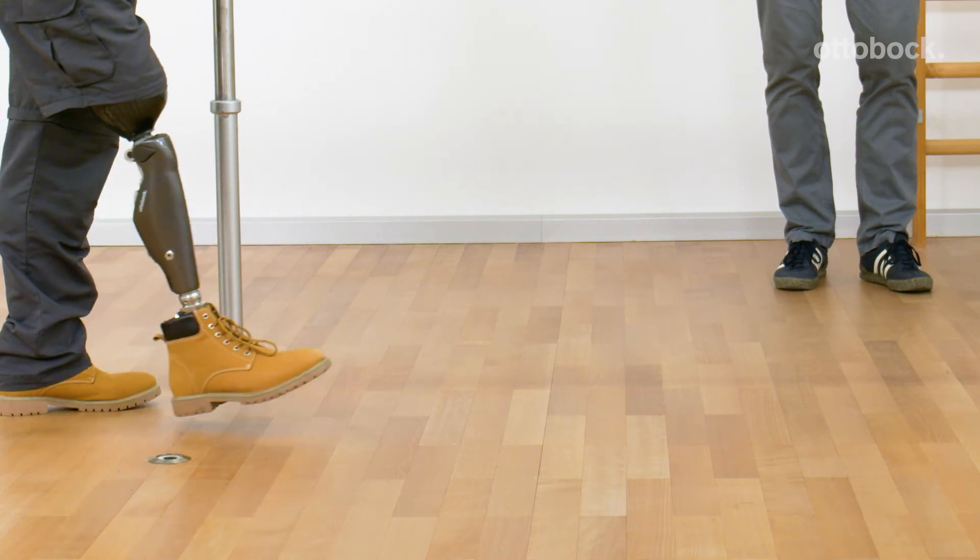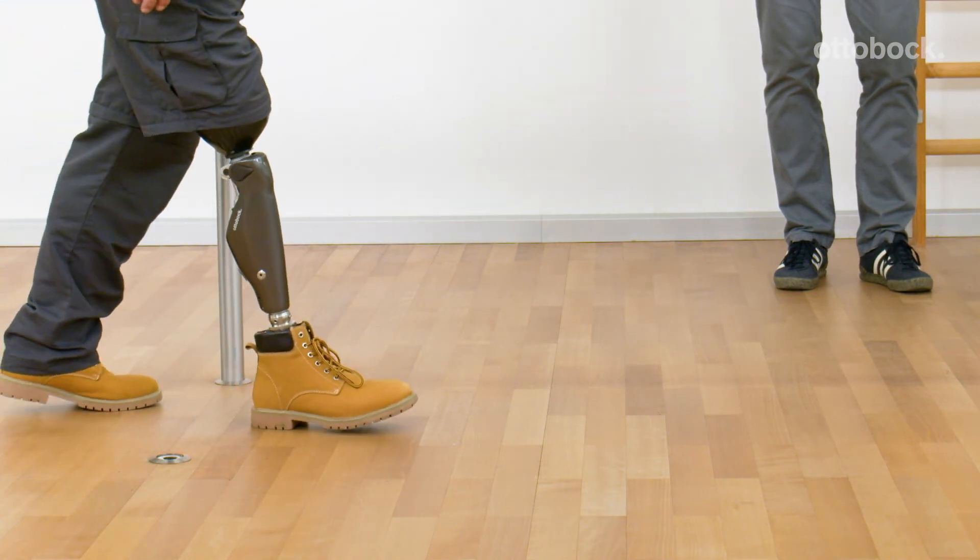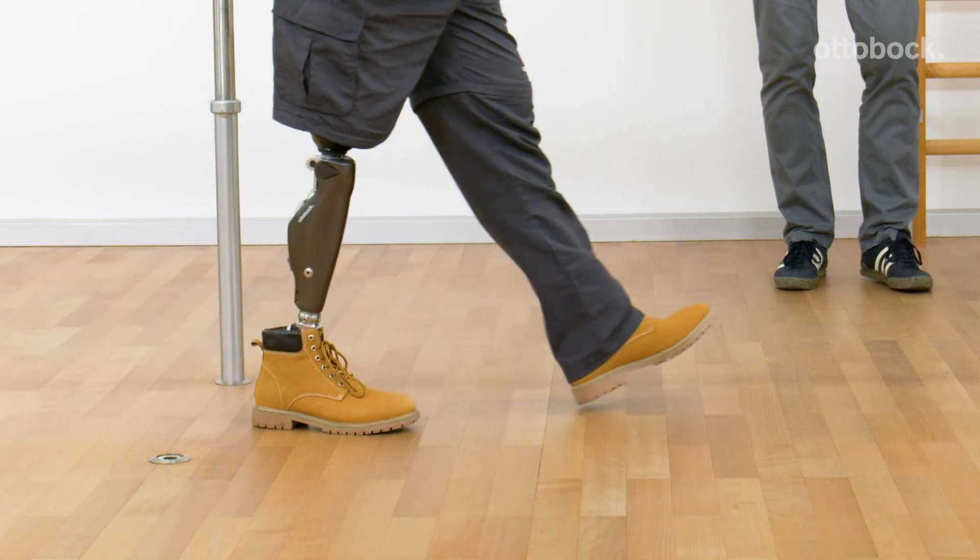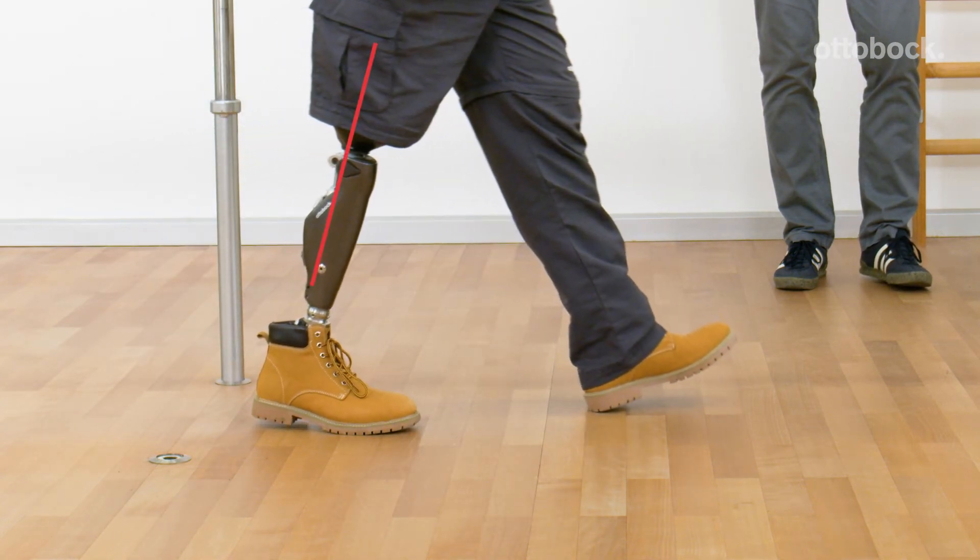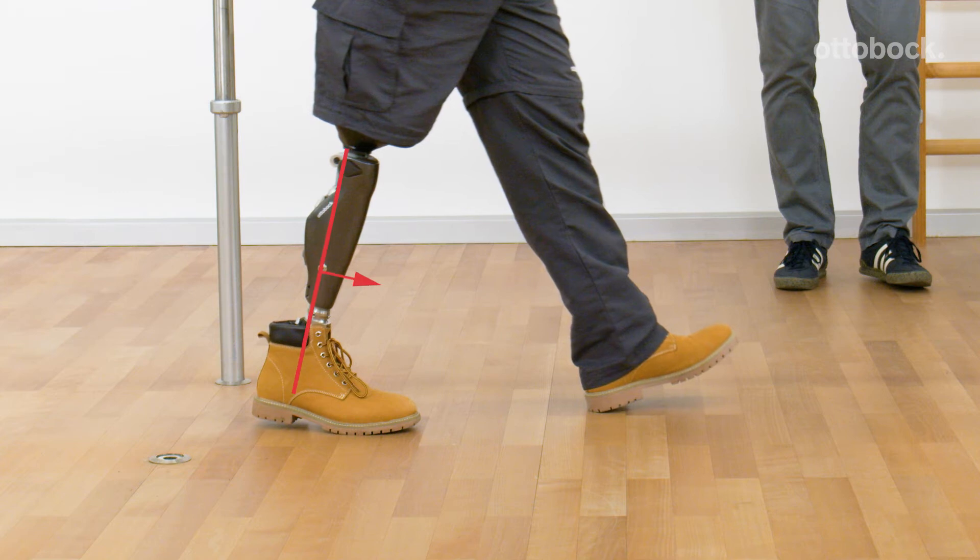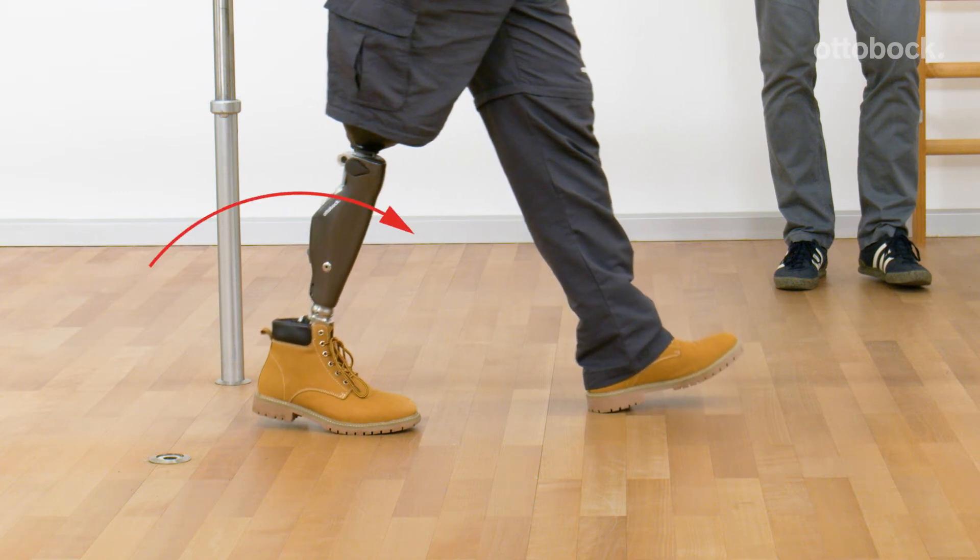As a reminder, the criteria for a stance release are: the knee joint is in extended position, the shank is tilted forward, and the shank is rotating forward.